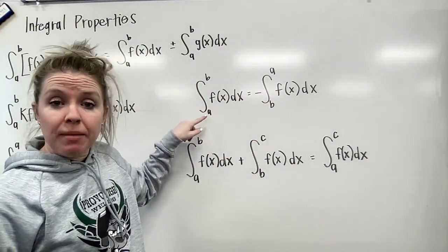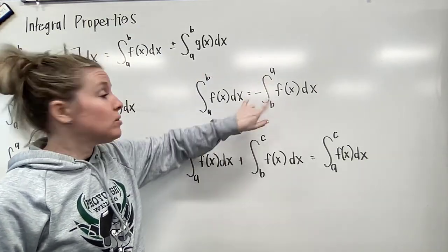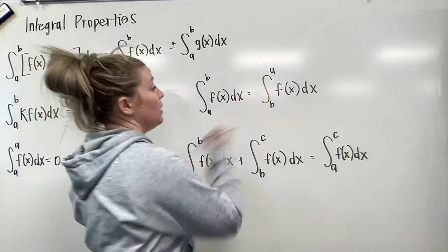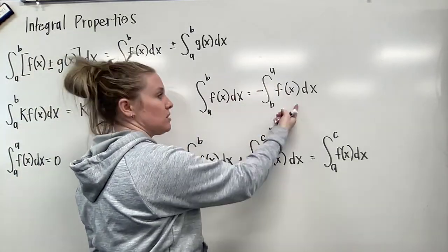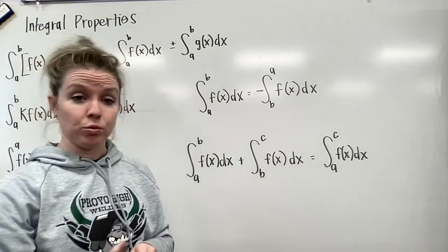Here, remember we're switching the bounds from A to B to B to A. When we do that, we end up with the opposite value of our integral. So if this is positive, this will come out negative. If this was negative, this will come out positive.